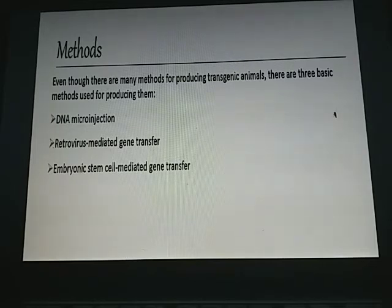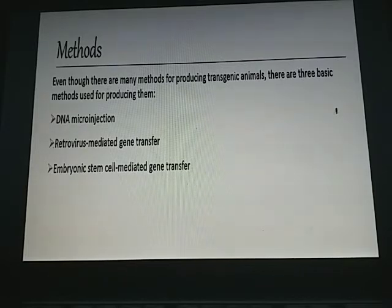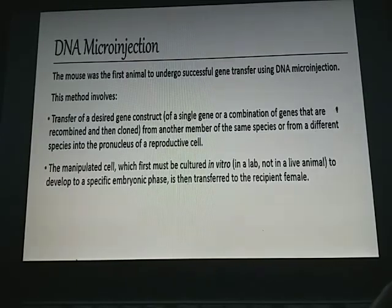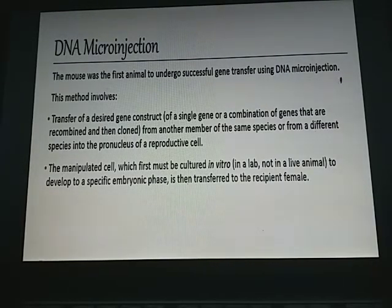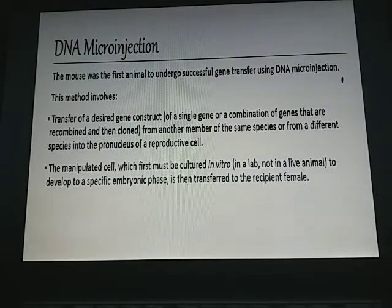There are three basic methods for producing transgenic animals: DNA micro injection, retrovirus-mediated gene transfer, and embryonic stem cell-mediated gene transfer. In DNA micro injection, the mouse was the first animal to undergo successful gene transfer. This method involves transferring a desired gene construct from the same or a different species into the pronucleus of a reproductive cell, which is then cultured in vitro to a specific embryonic phase before being transferred to a recipient female.